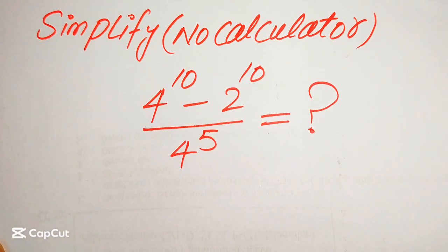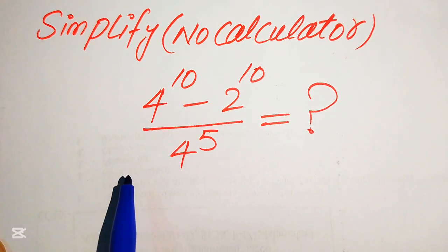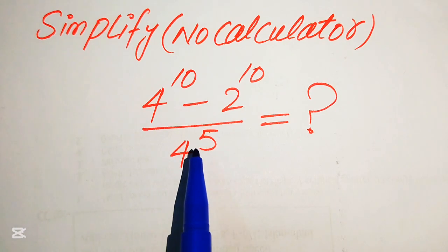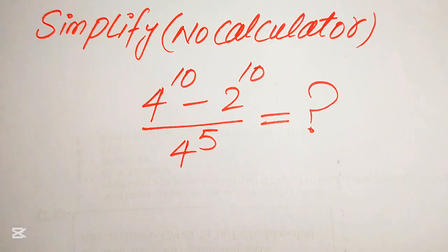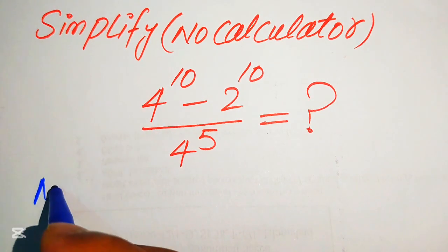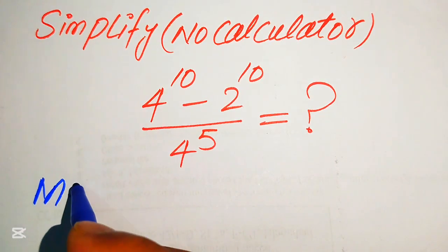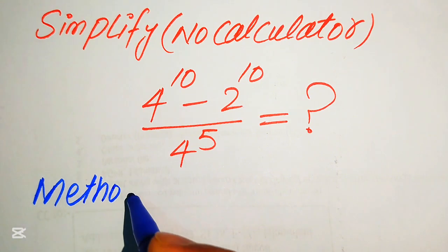Hello everyone. How to simplify this nice algebraic expression: 4 to the power of 10 minus 2 to the power of 10, divided by 4 to the power of 5. We write this algebraic expression into the simplified form. We will solve this problem using two methods, and I hope you like both of them.